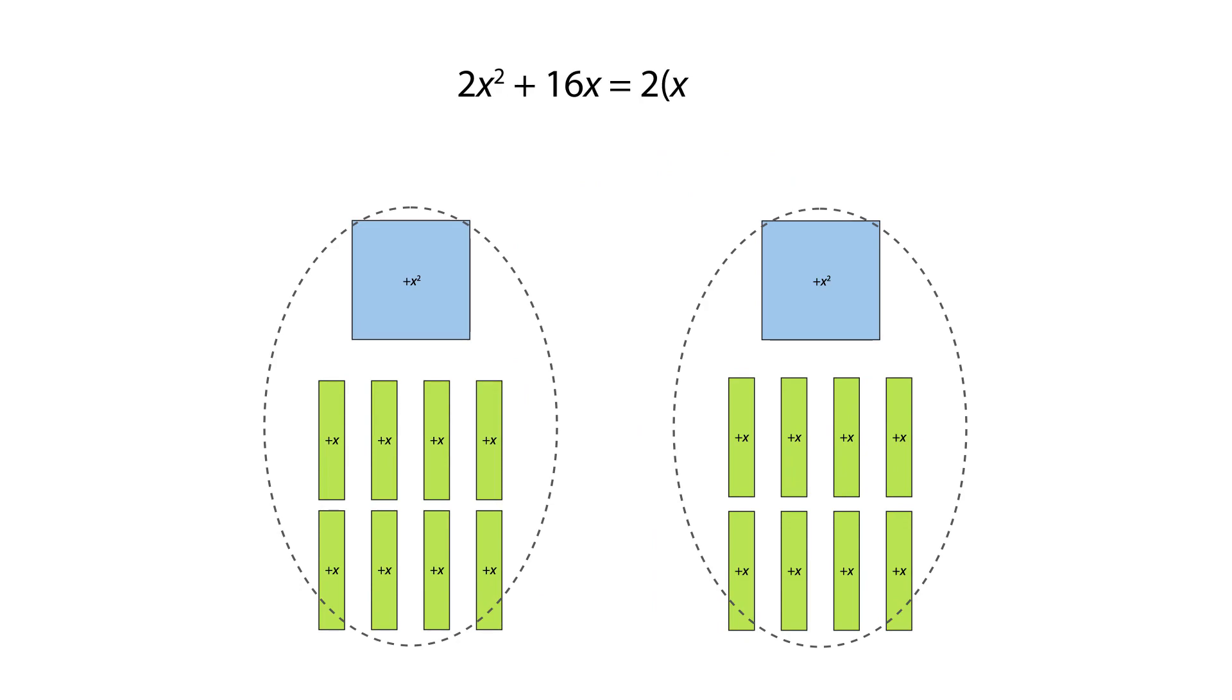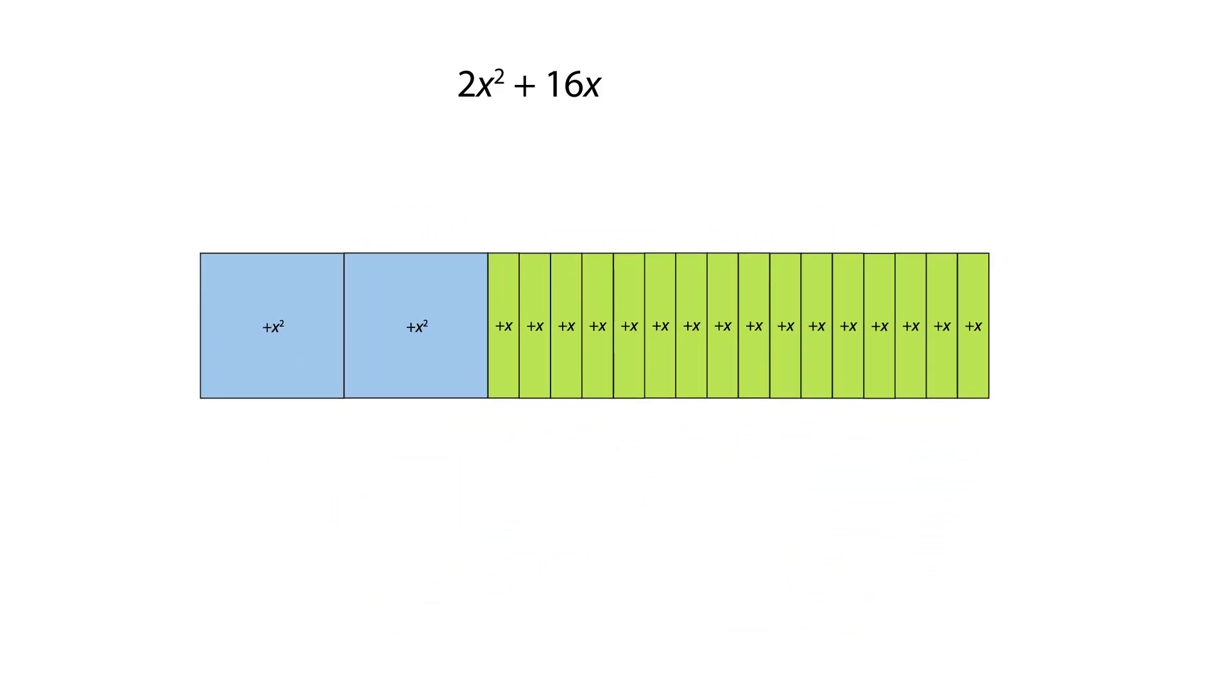We can also arrange the tiles into a rectangular shape. The dimensions of the rectangle reveal a different factorization, that is x multiplied by 2x plus 16.